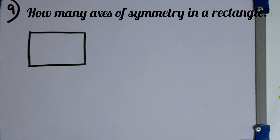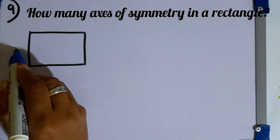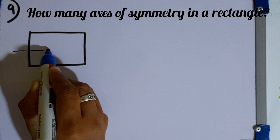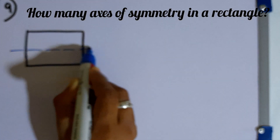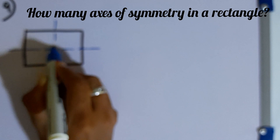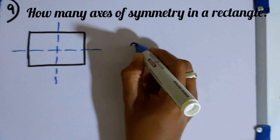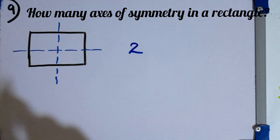Question number 9. How many axes of symmetry does a rectangle have? In a rectangle we have 2 axes of symmetry. So the answer is 2.